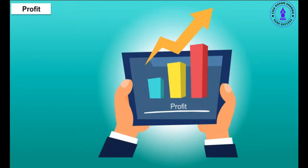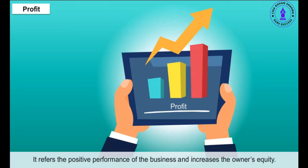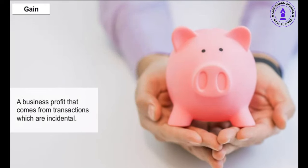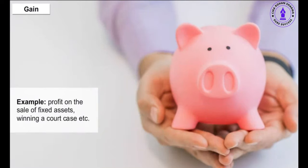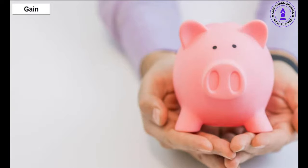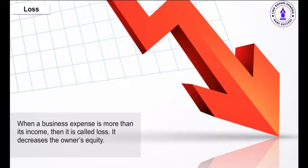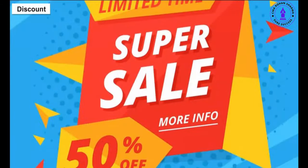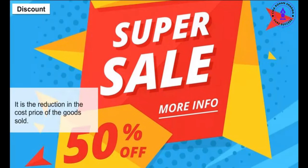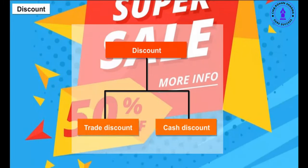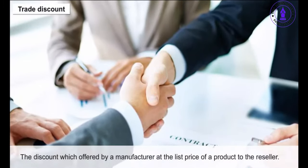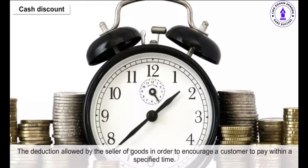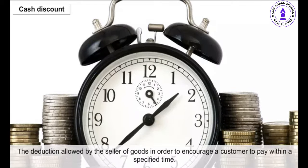Profit refers to the positive performance of the business and increases the owner's equity; profit equals revenue minus expenses. Gain is a business profit that comes from incidental transactions, e.g., profit on the sale of fixed assets, winning a court case. Loss: when a business's expenses are more than its income, it is called loss; it decreases the owner's equity. Loss equals expenses minus revenue. Discount is the reduction in the cost price of goods sold, divided into two types: trade discount — offered by a manufacturer at the list price to a reseller — and cash discount — a deduction allowed by the seller to encourage payment within a specified time.